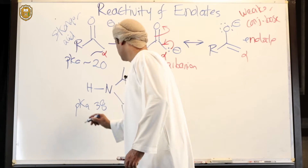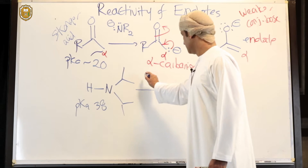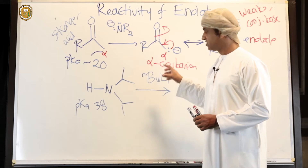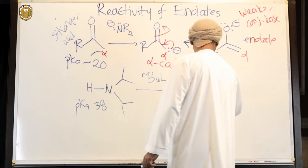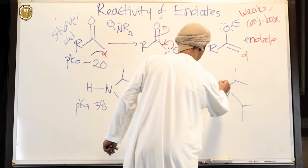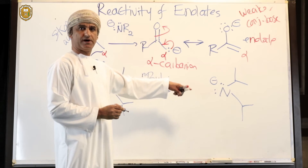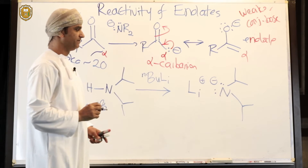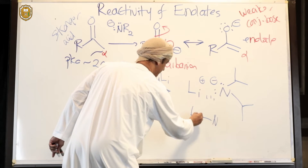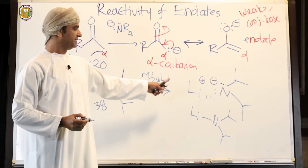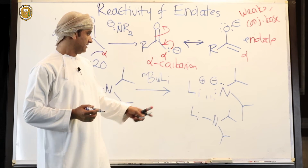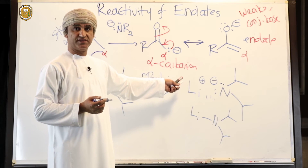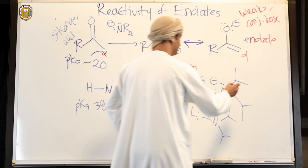If diisopropylamine is deprotonated with n-butyllithium — an organolithium and very strong base — this strong base removes that hydrogen to make the corresponding amide. The product is diisopropyl amide with lithium as a counter ion. This can also be drawn with a covalent bond between lithium and nitrogen.